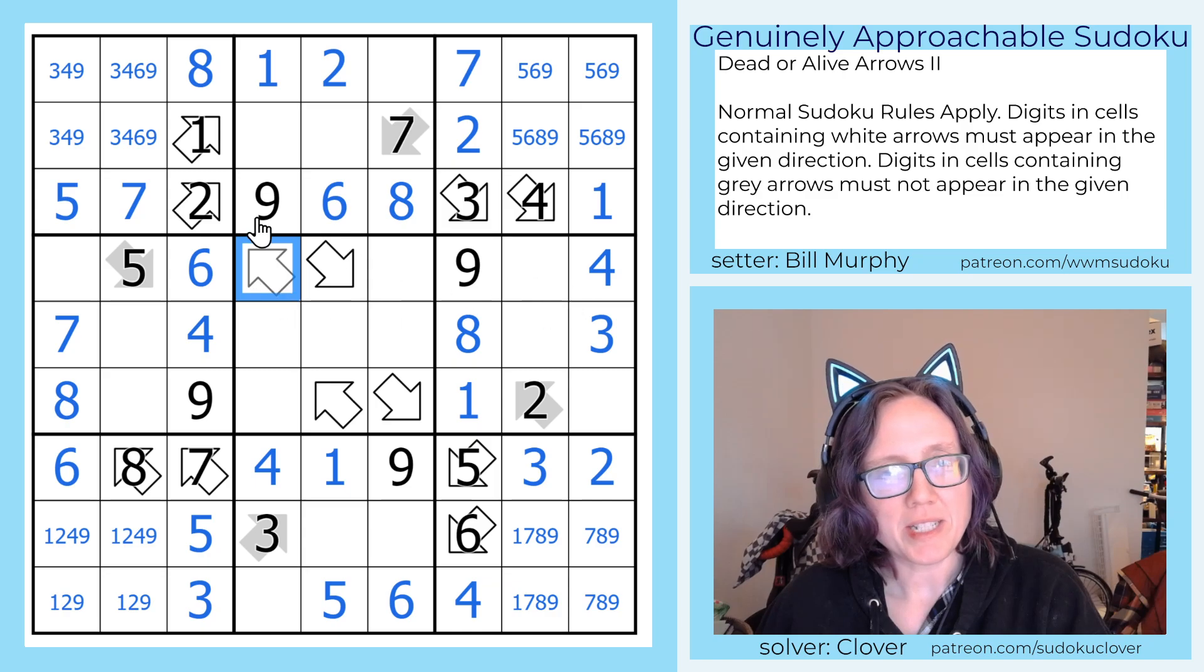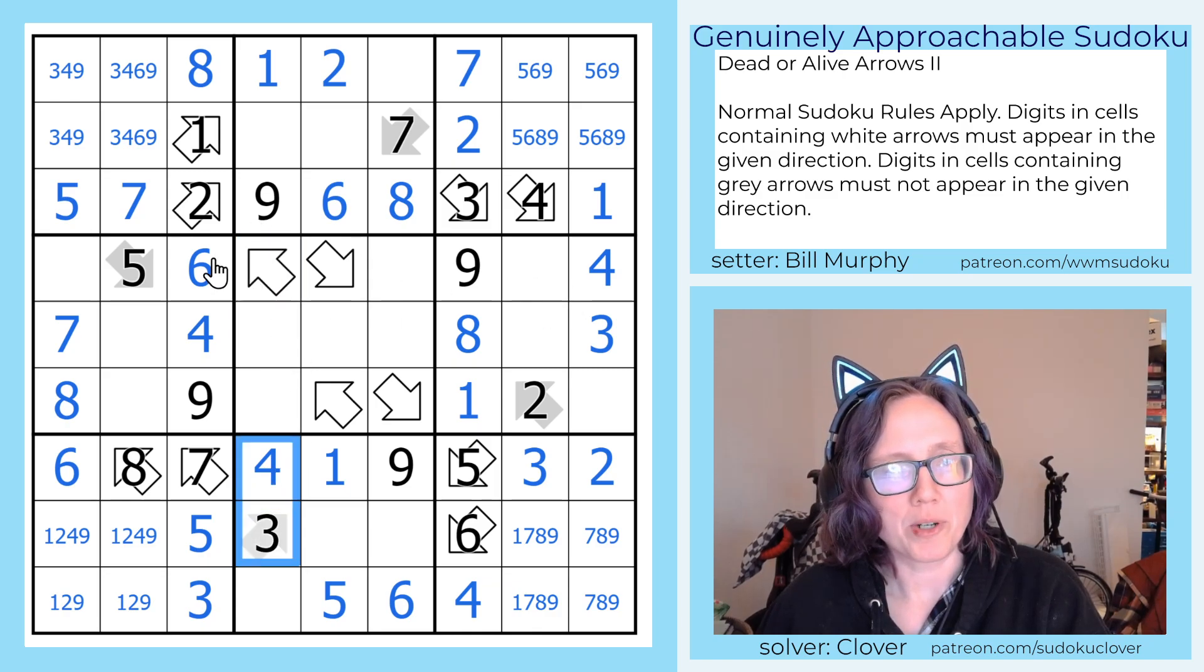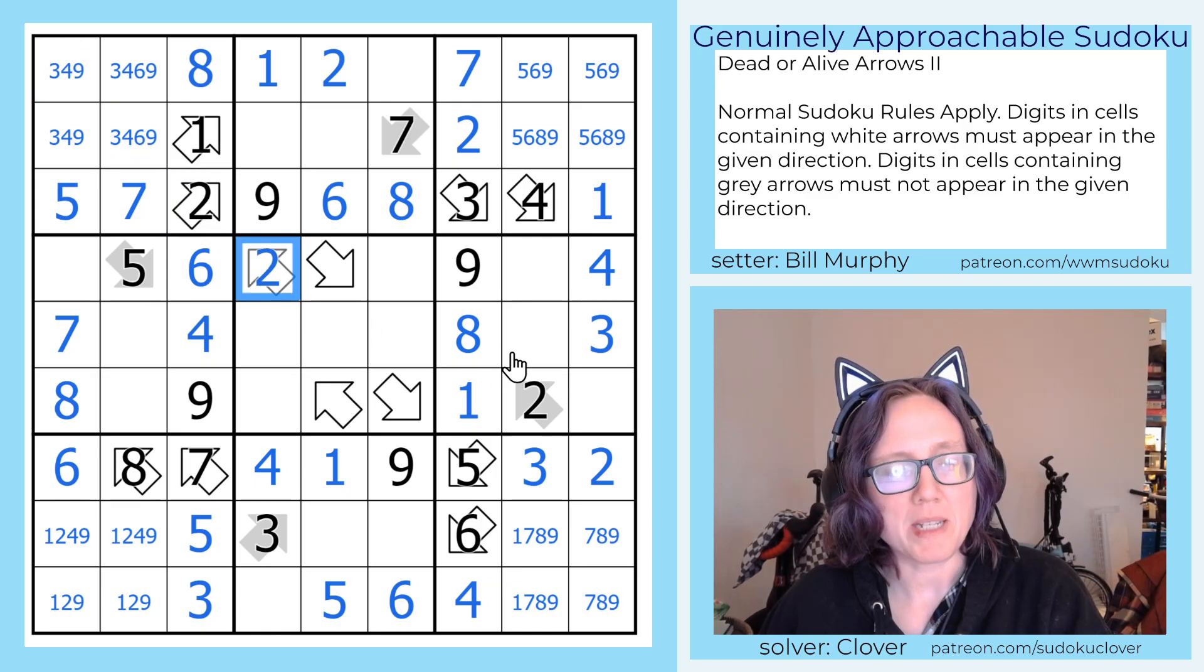However, this cell already sees 3, 4, 6, and 9 in those cells. So it can't be 3, 4, 6, or 9, it must be a 2.